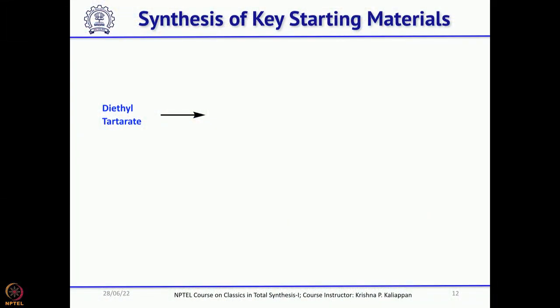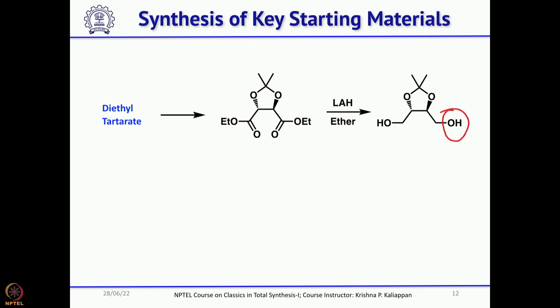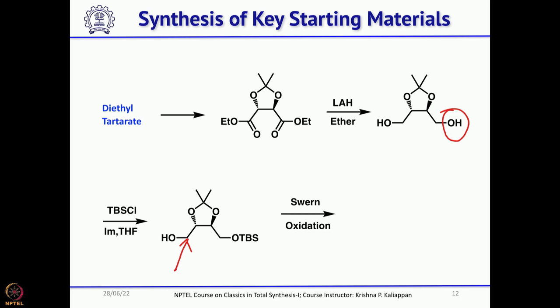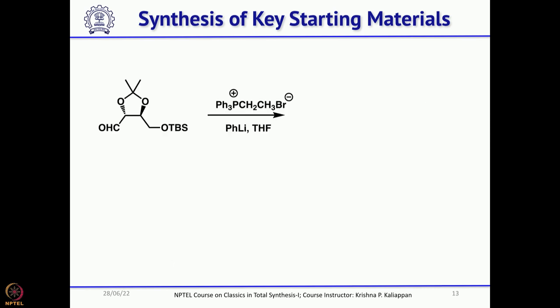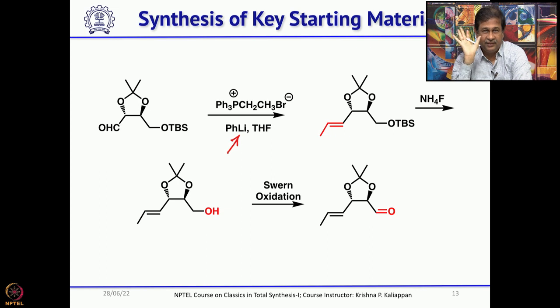Coming back to the total synthesis of FR900848, Barrett also started with diethyl tartrate. The starting material for one fragment is diethyl tartrate: protect the two hydroxyl groups as an acetonide, reduce the esters to a diol, protect one of them as TBS ether (since it is symmetrical), then oxidize the other primary alcohol under Swern conditions to get the aldehyde. Once you have this aldehyde, do a Wittig reaction with an ethyl bromide-derived Wittig reagent using Manfred Schlosser's conditions with excess phenyl lithium to give a trans (E) double bond. Then remove the TBS group and oxidize to get one fragment required for the total synthesis.